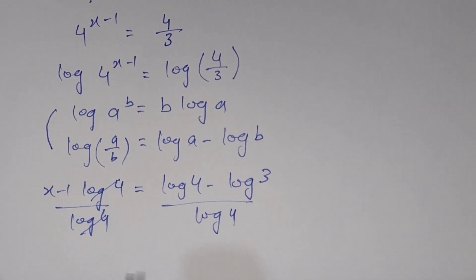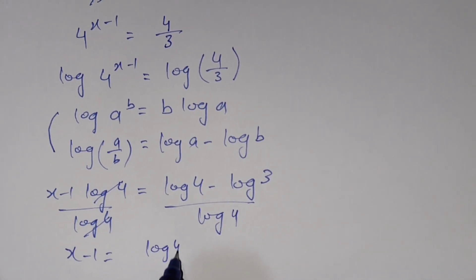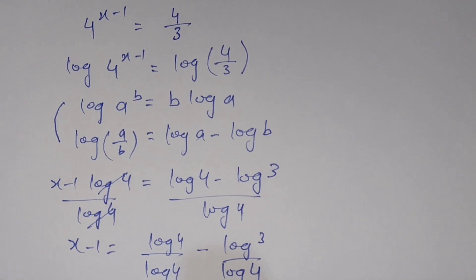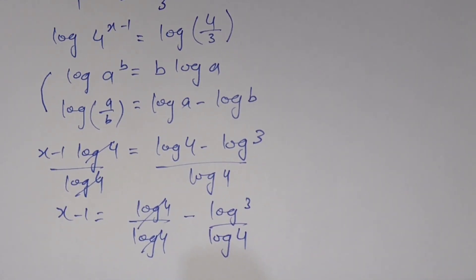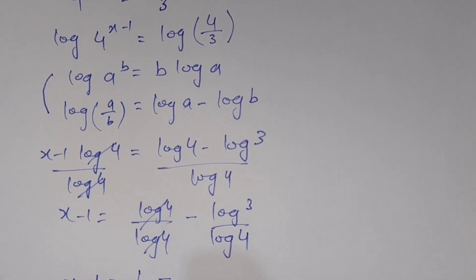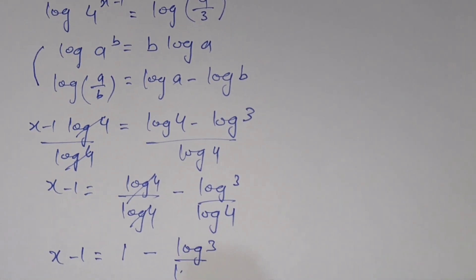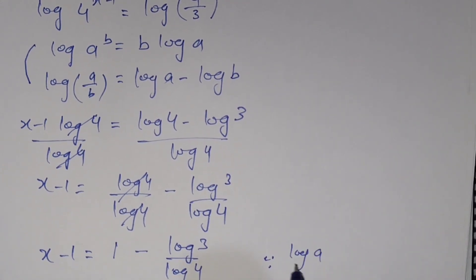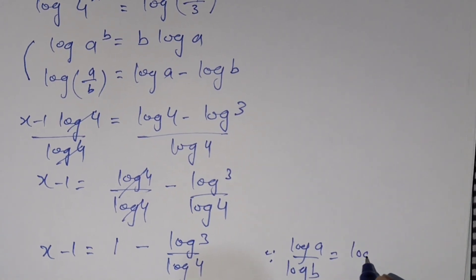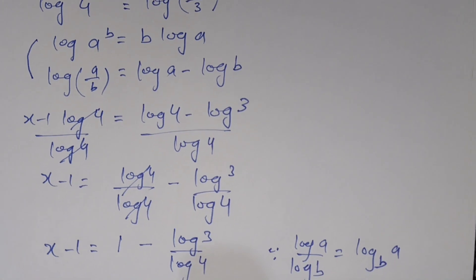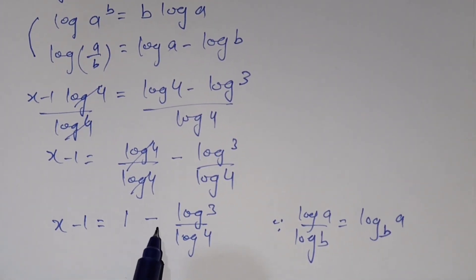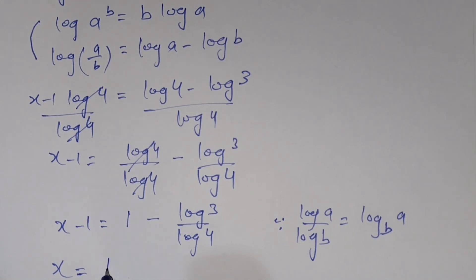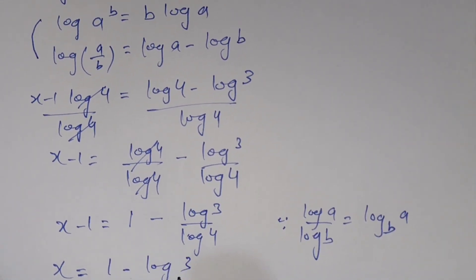Now we divide both sides by log 4. Log 4 cancels on the left, leaving x minus 1 equals log 4 / log 4 minus log 3 / log 4. Log 4 over log 4 equals 1, so x minus 1 equals 1 minus log 3 / log 4. Using the change of base formula, log a over log b equals log base b of a.